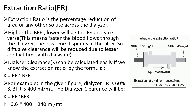Substituting the values gives an extraction ratio of 60%. From this, you can see that a higher blood flow rate results in a lower extraction ratio, and a lower blood flow rate gives a higher extraction ratio. The faster blood flows through the dialyzer, the less time it spends inside, so diffusive clearance is reduced due to lesser contact time. Dialyzer clearance can also be calculated if you know the extraction ratio: clearance = extraction ratio × blood flow rate.